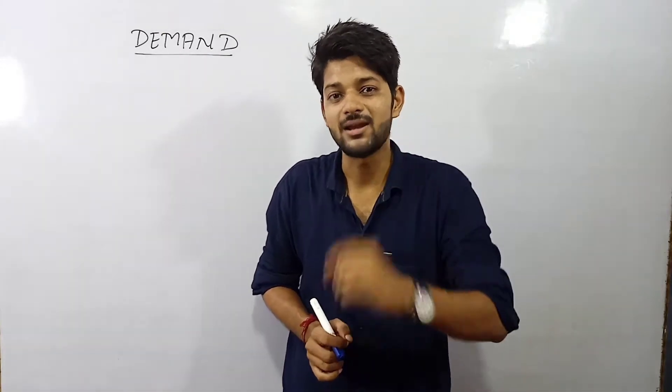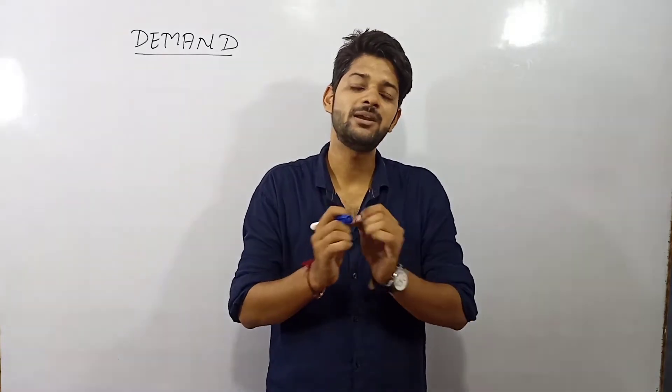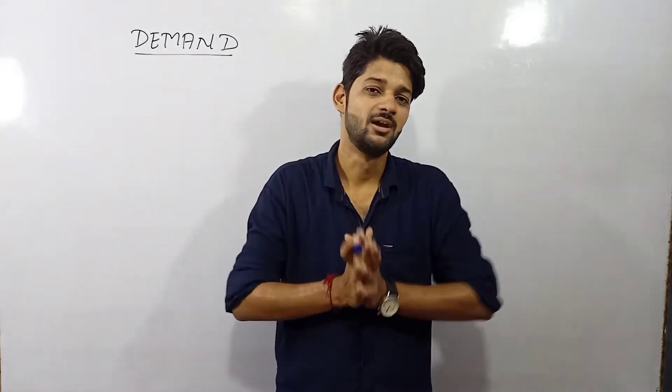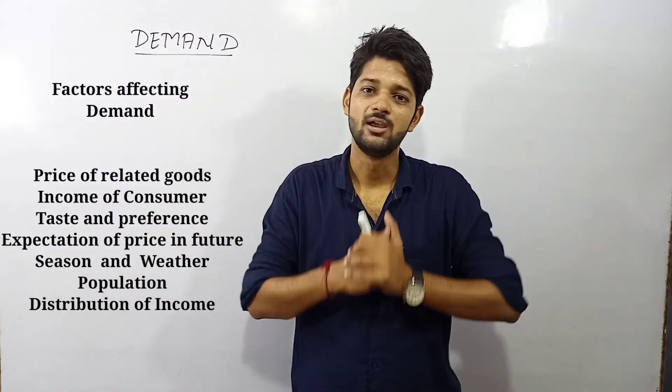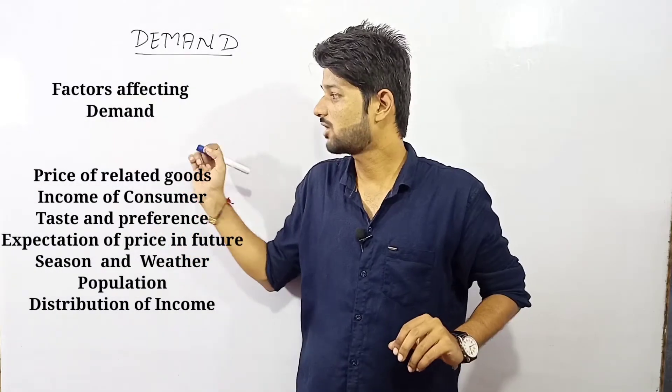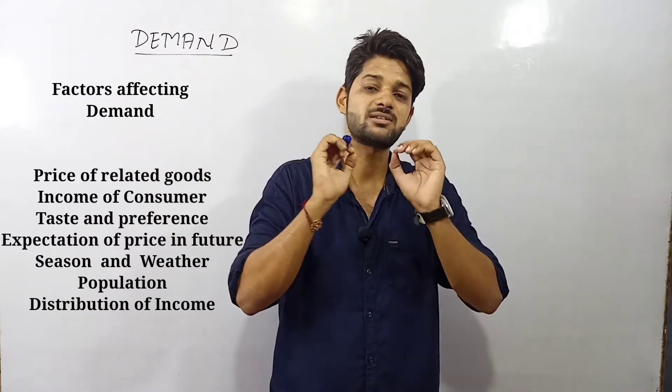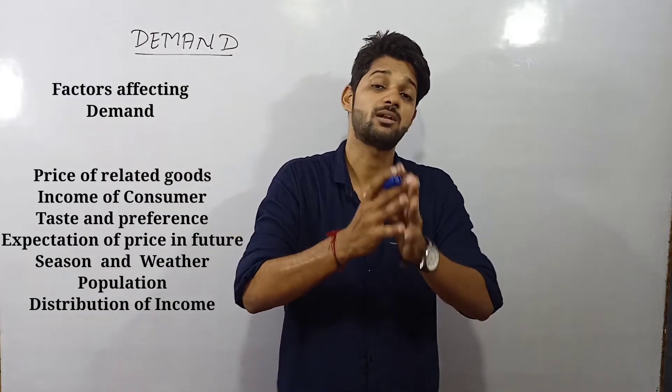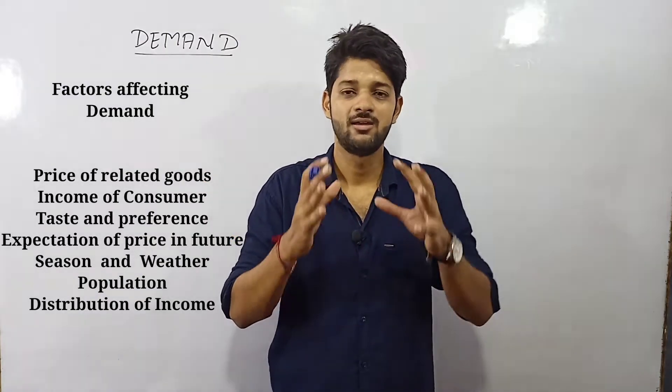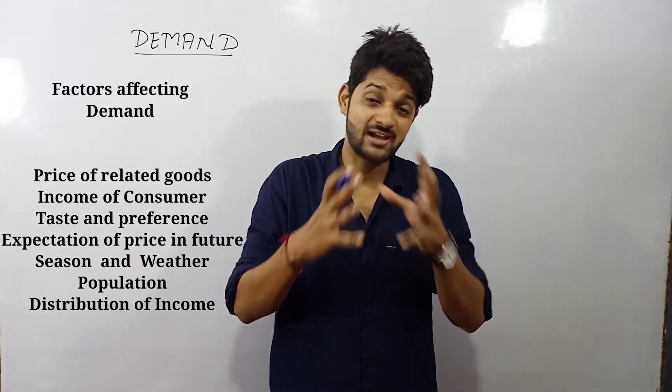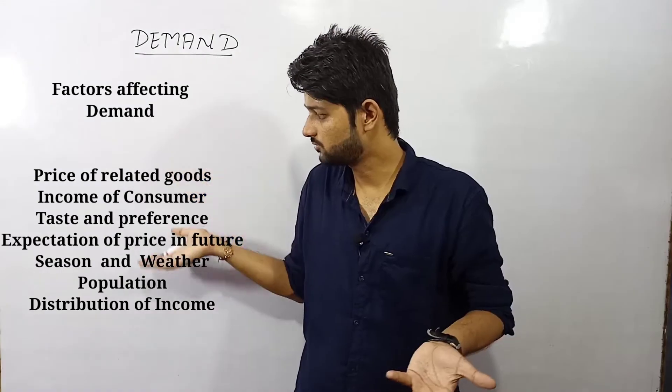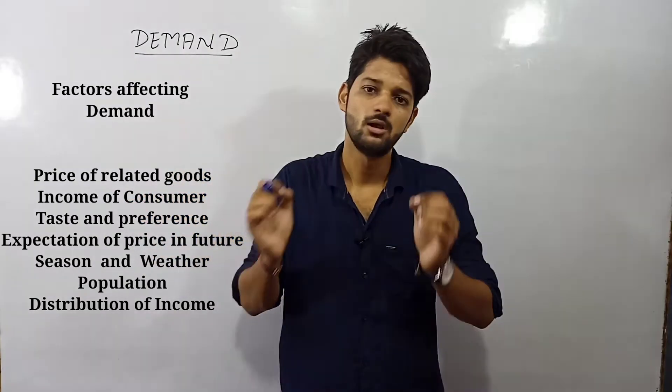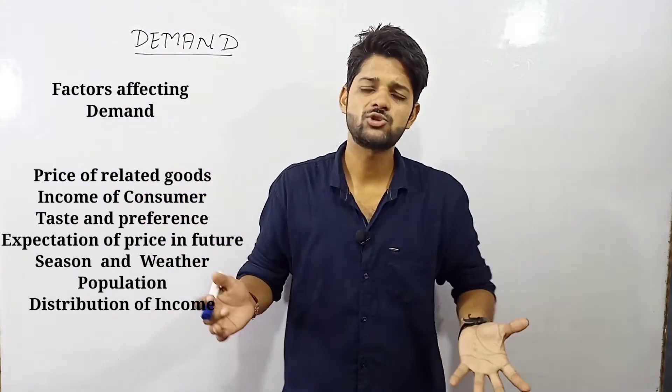Yes, the golden line is that keeping the other factors constant. There are seven factors here. The number one factor is the price of related goods. Number second is the income of consumer. The third is taste and preference. Then expectation of price change in future. Then you get to know here season and weather, population, distribution of income.